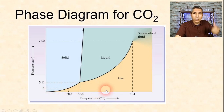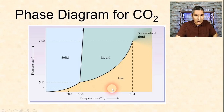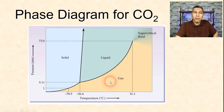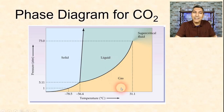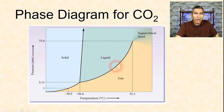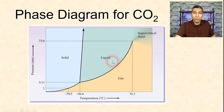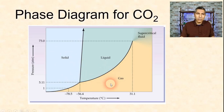What if we increase the pressure instead? At 20°C, if we raise the pressure, carbon dioxide transitions from gas to liquid — and gas to liquid is called condensation. So you would actually observe condensation of carbon dioxide if you raised the pressure at room temperature. This phase diagram is very useful for seeing the temperatures and pressures at which a substance is going to exist.